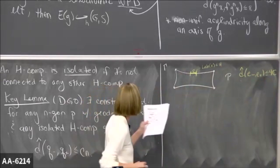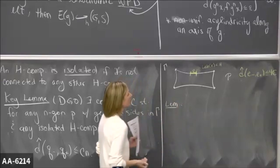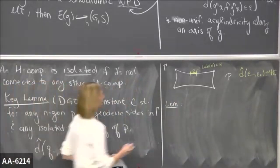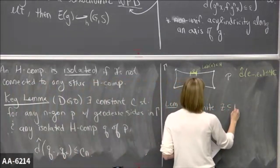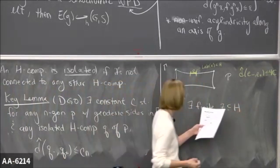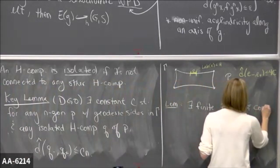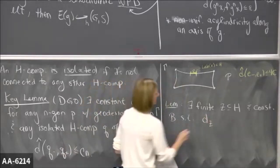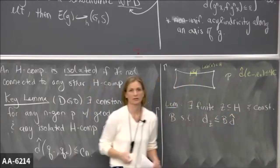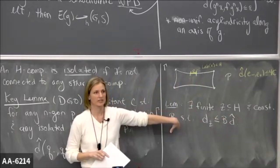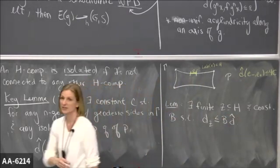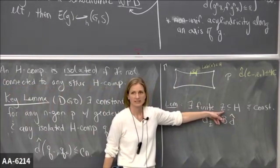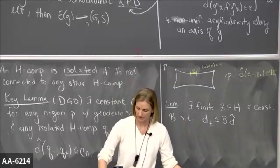The other important lemma is that there is a relationship between the D-hat metric and a word metric on H, or an extended word metric on H. In general, there exists a finite subset Z of H — not necessarily a generating set a priori, just some finite subset — and a constant B, such that the extended word metric with respect to Z is less than or equal to B times the D-hat metric. These are both metrics on H. If H is a finitely generated subgroup, you could add finitely many elements to Z and assume this is a finite generating set, but it's a little more general than that.